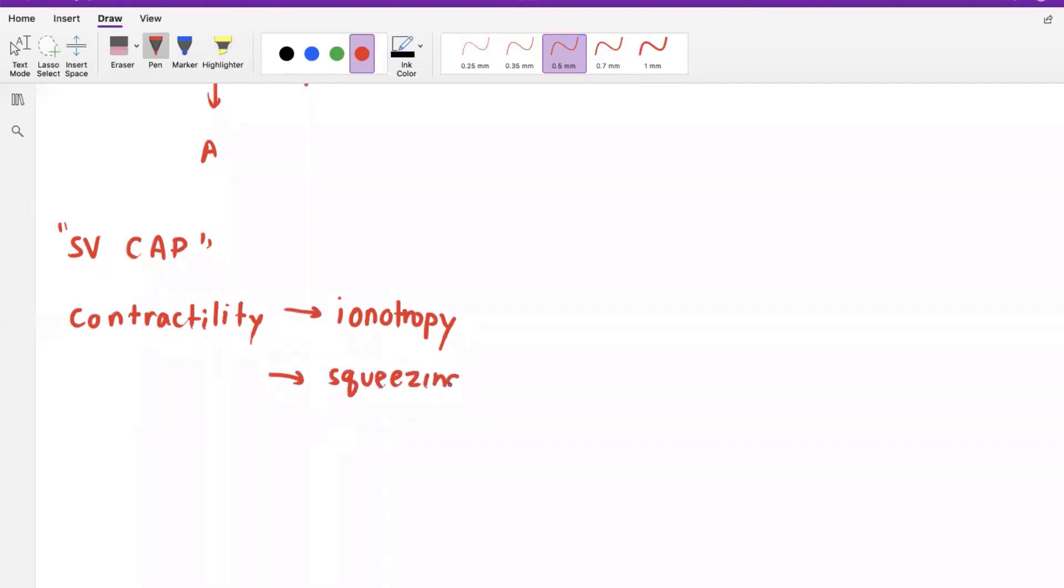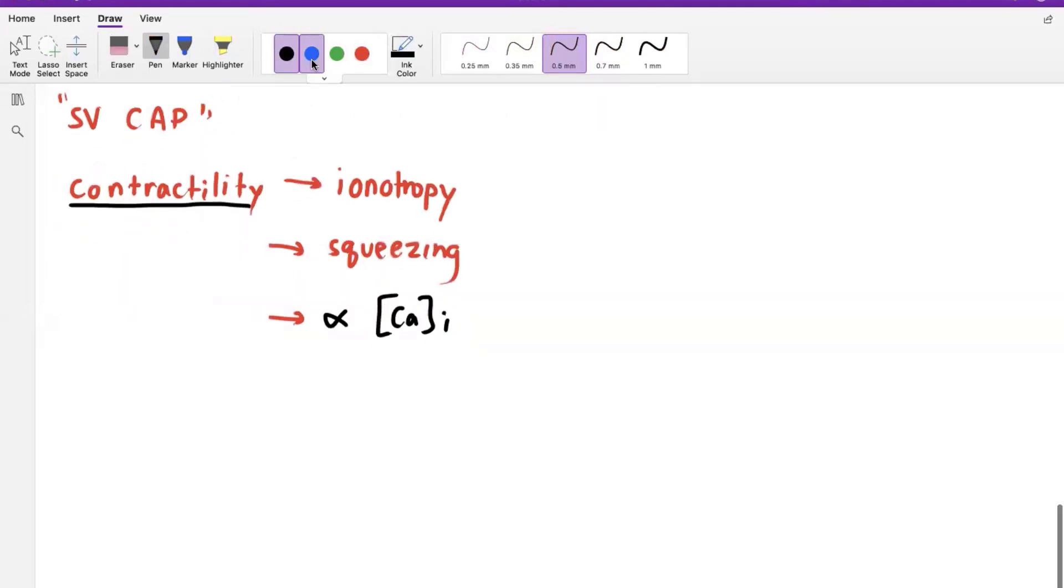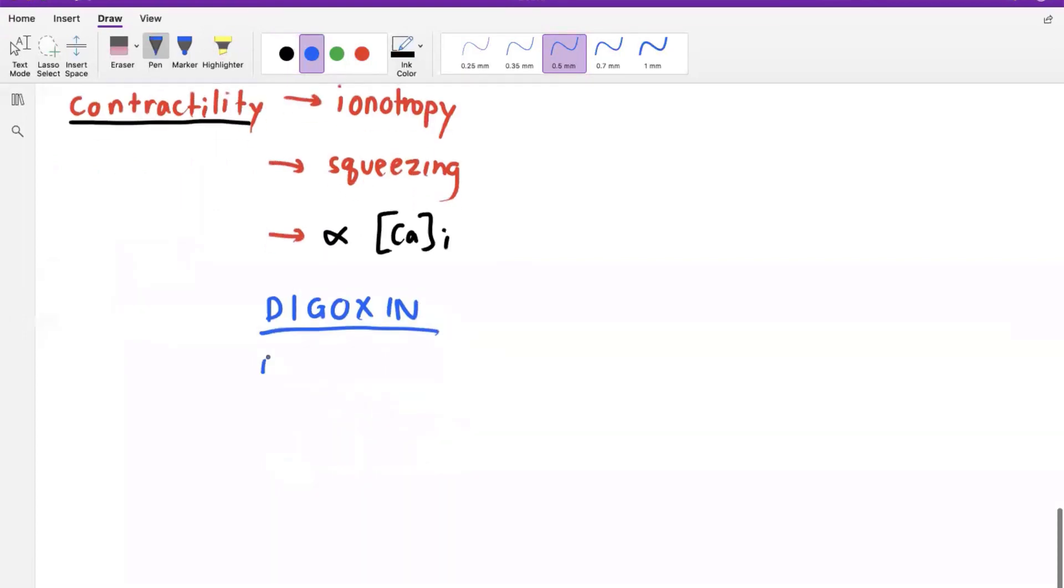And from a cellular physiology perspective, the USMLE can actually ask you that the degree of contractility in your body is directly proportional to the amount of intracellular calcium that you have. And that's important to understand because there's a nice USMLE pharmacology tie-in here in which you have a patient who is on digoxin. So what is the mechanism of action of digoxin?